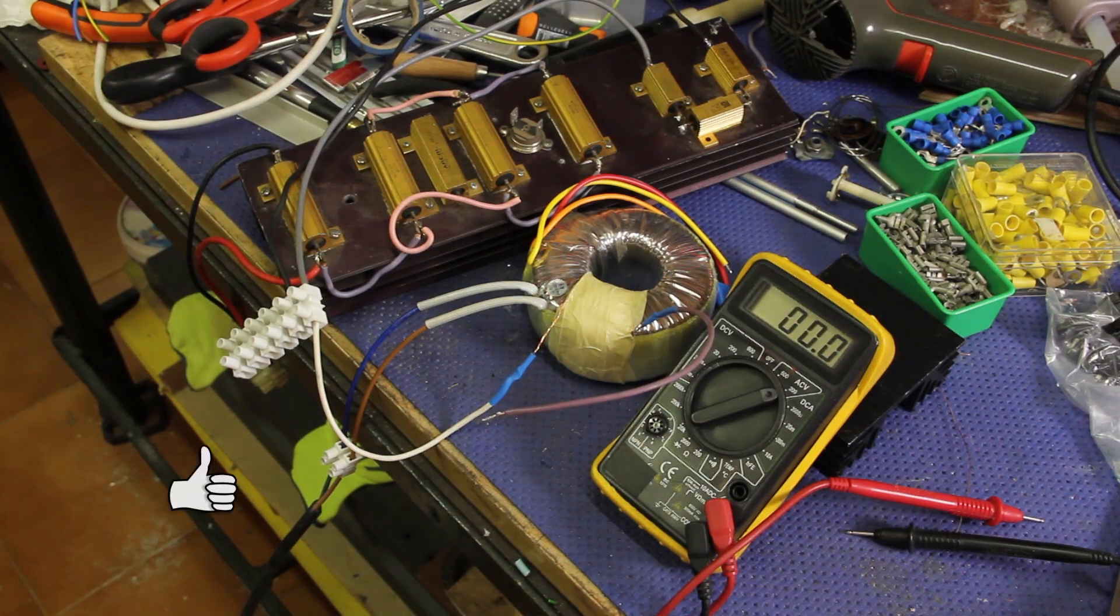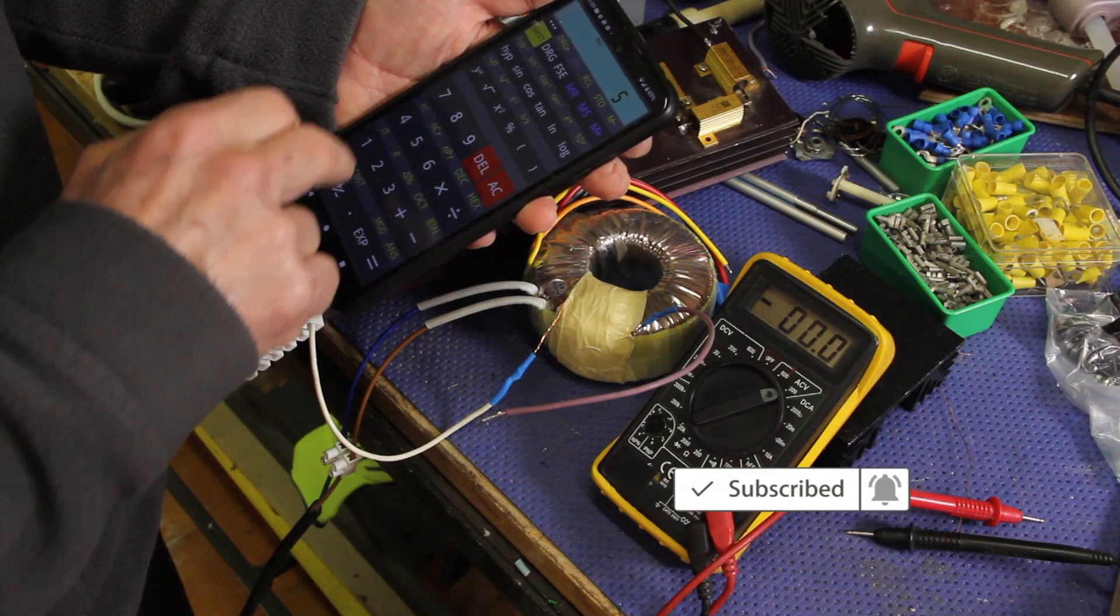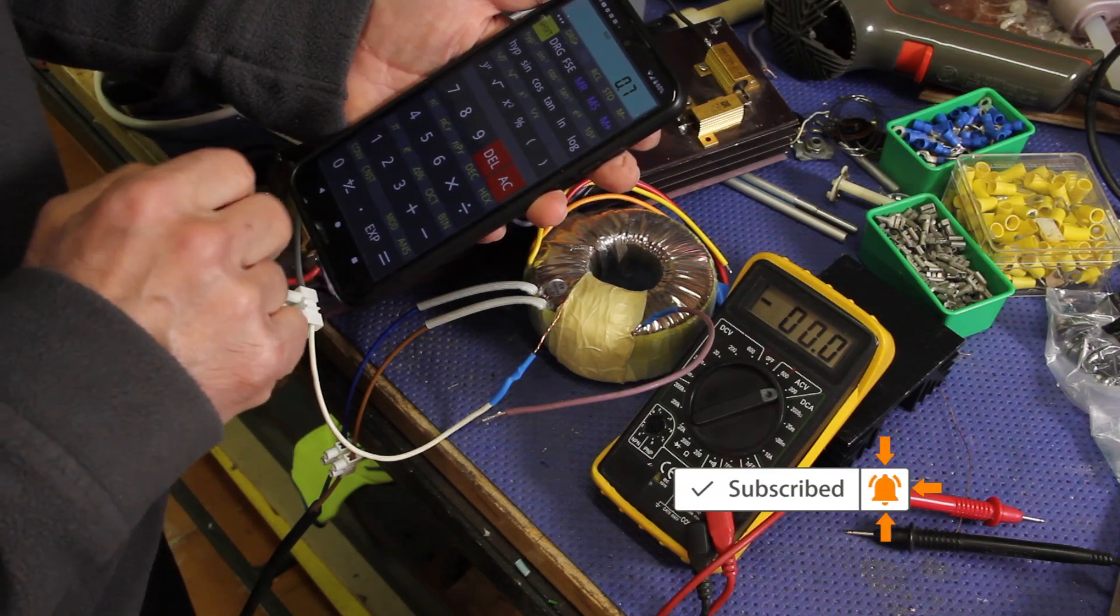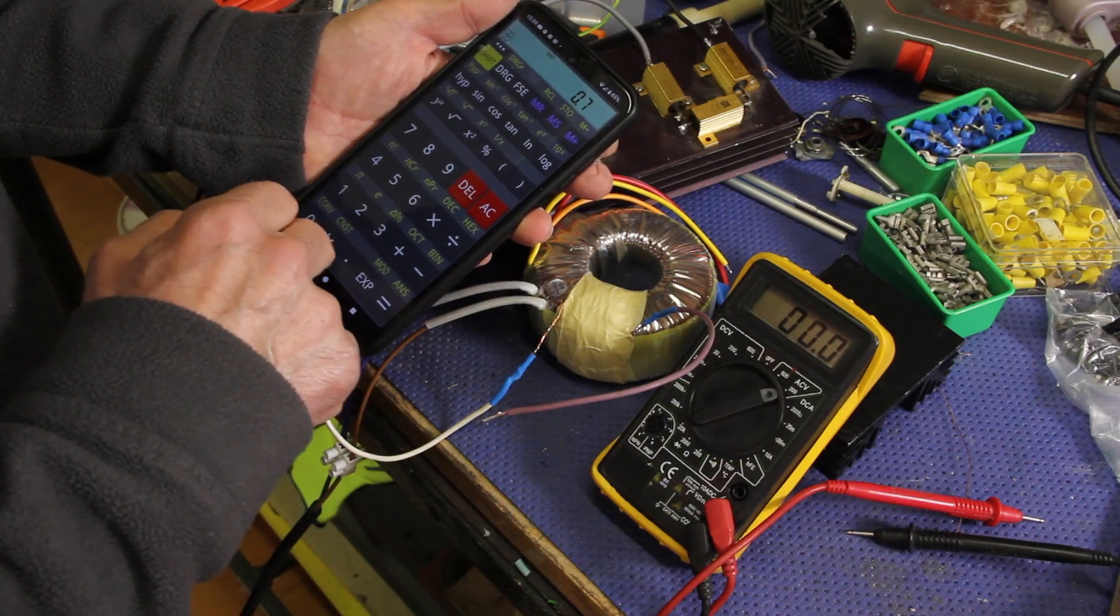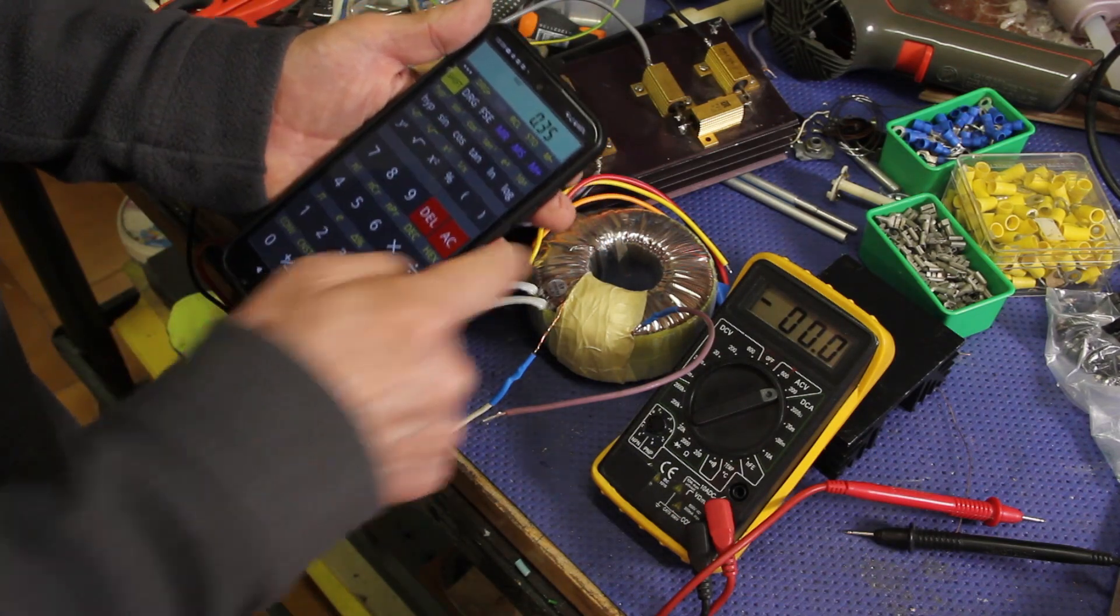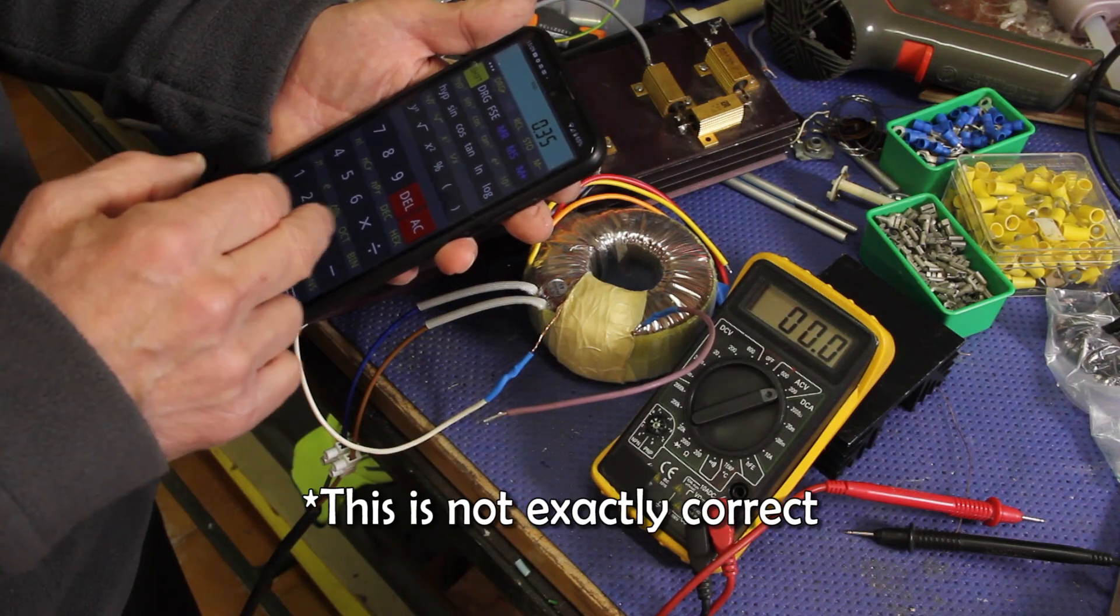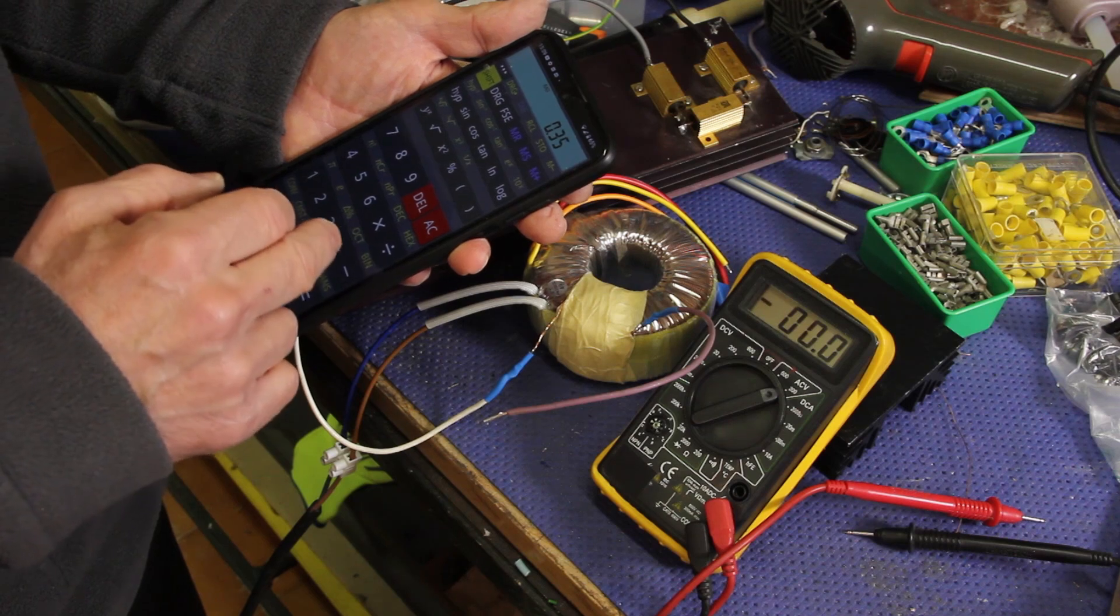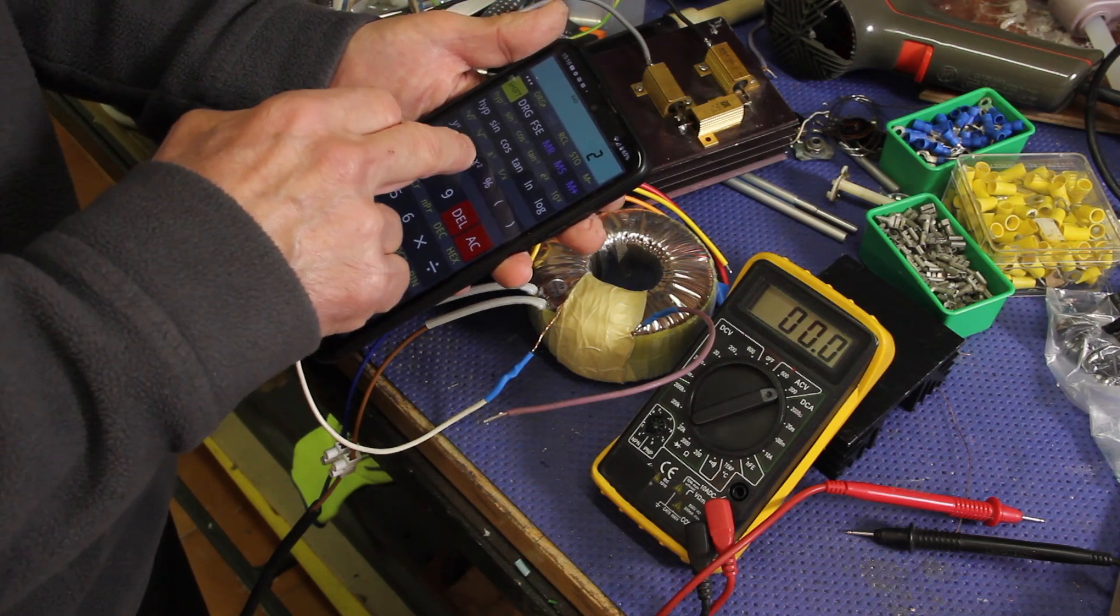Let's calculate the resistance. 6.5 volts minus 5.8 volts which is 0.7 volts over 2 amps. It is 0.35 ohm of internal resistance of the resistance of this wire. We can also calculate the power here. This resistance times the current squared.